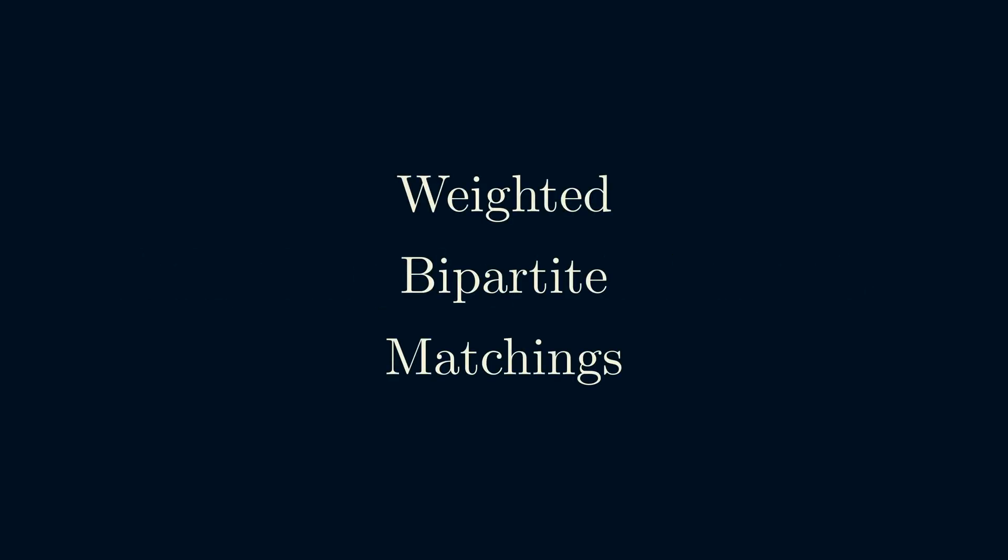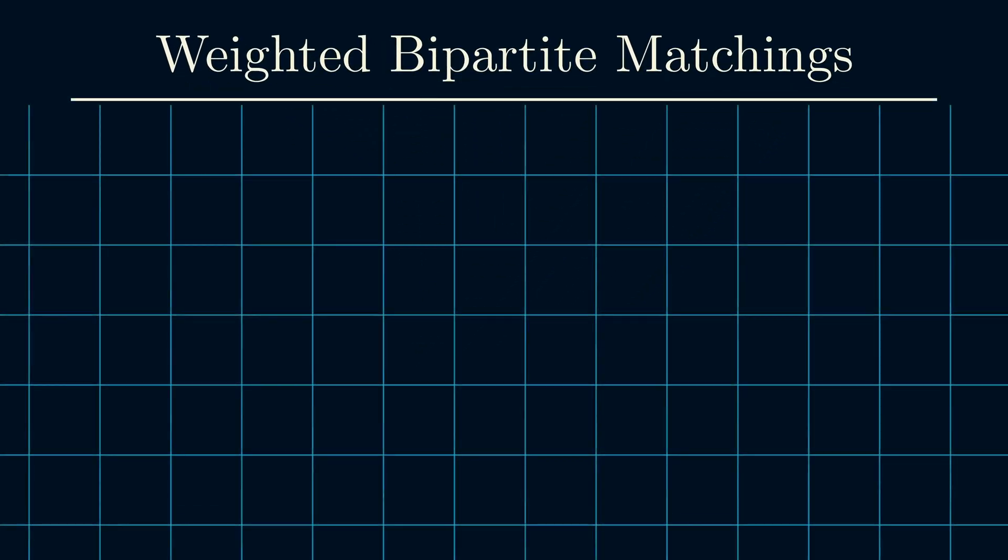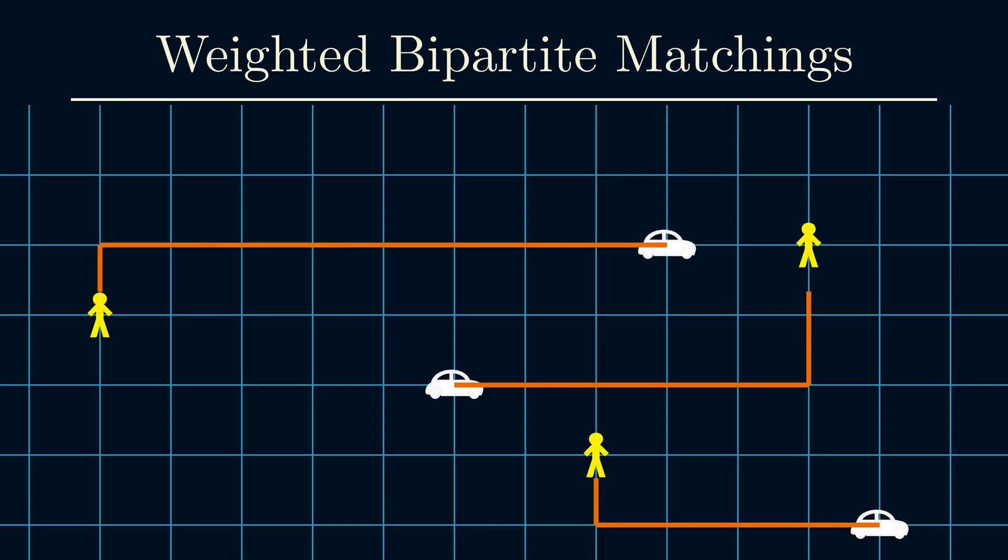Today I'm going to talk about a problem called weighted bipartite matchings. This problem shows up a lot. One place might be at a ride-sharing company. So imagine you have a bunch of cars and passengers. And you have to decide which car do you dispatch to which passenger? As a metric, we might want to minimize something like the total distance traveled or the total waiting time.